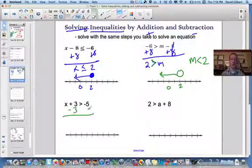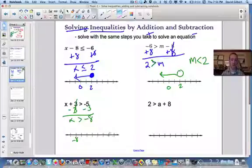A couple quick more examples. So we've got x is greater than negative 8. So negative 8 is here. Open circle, greater than.